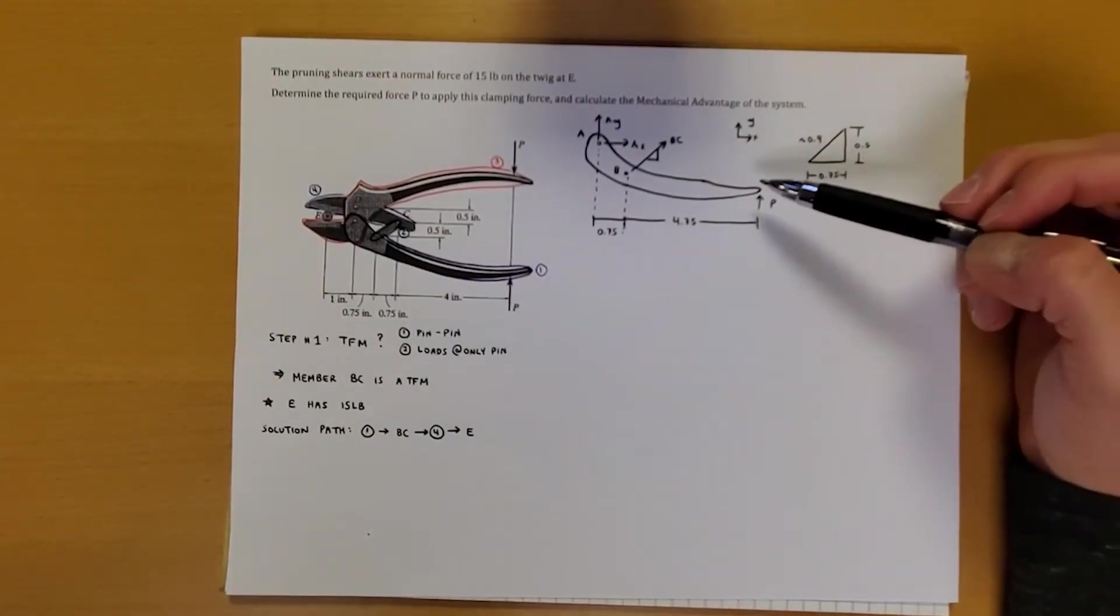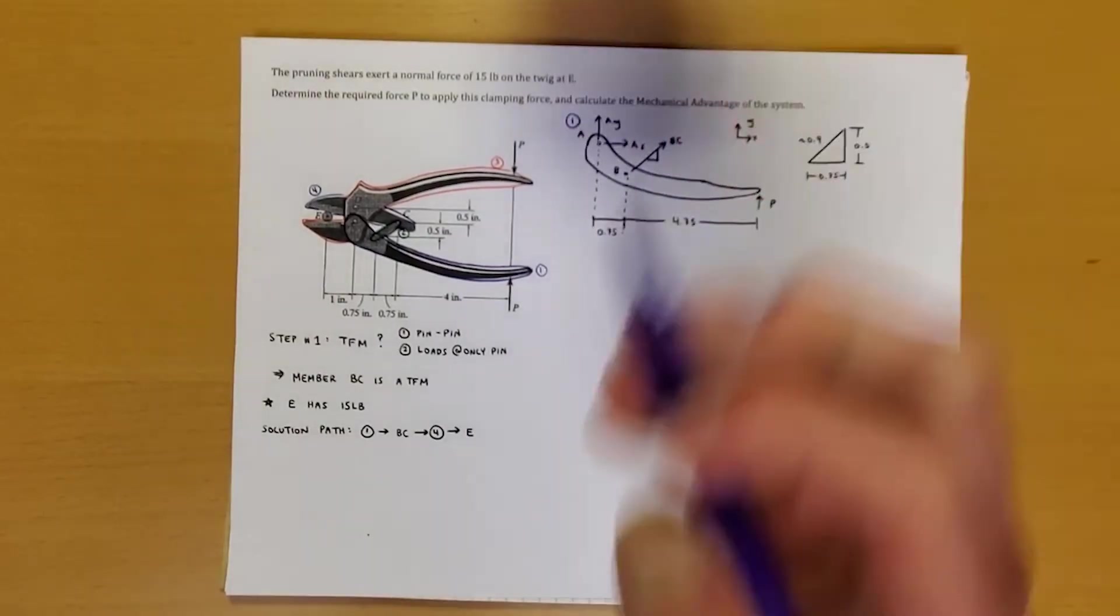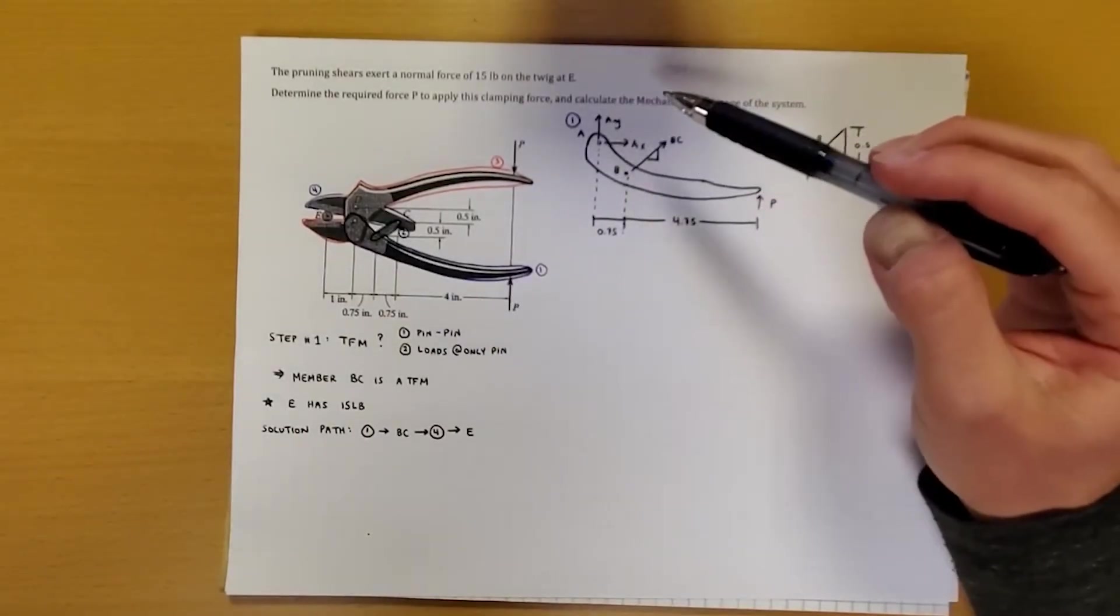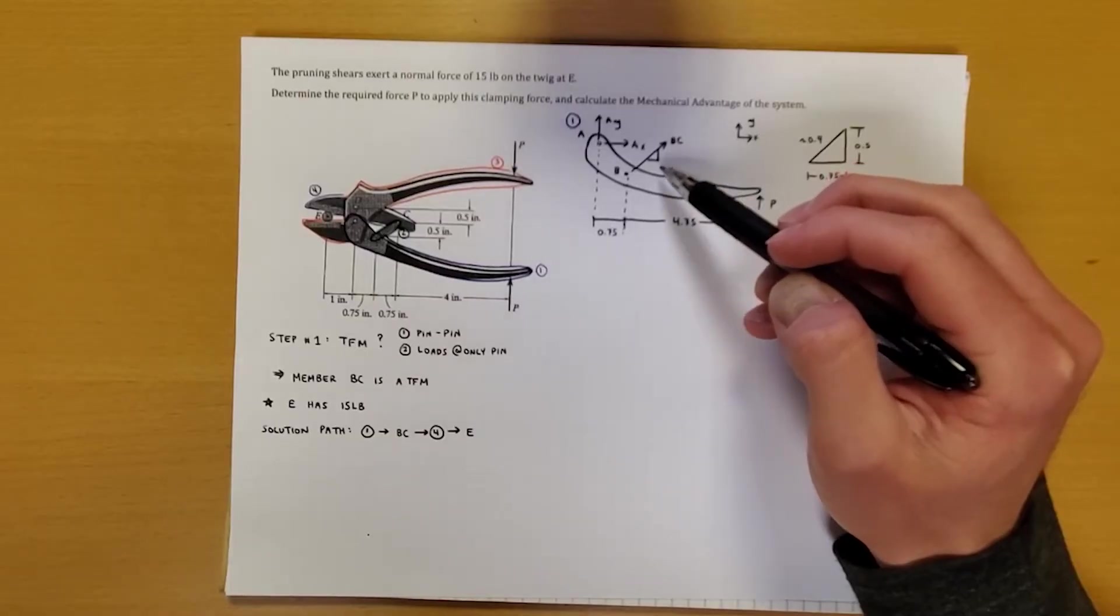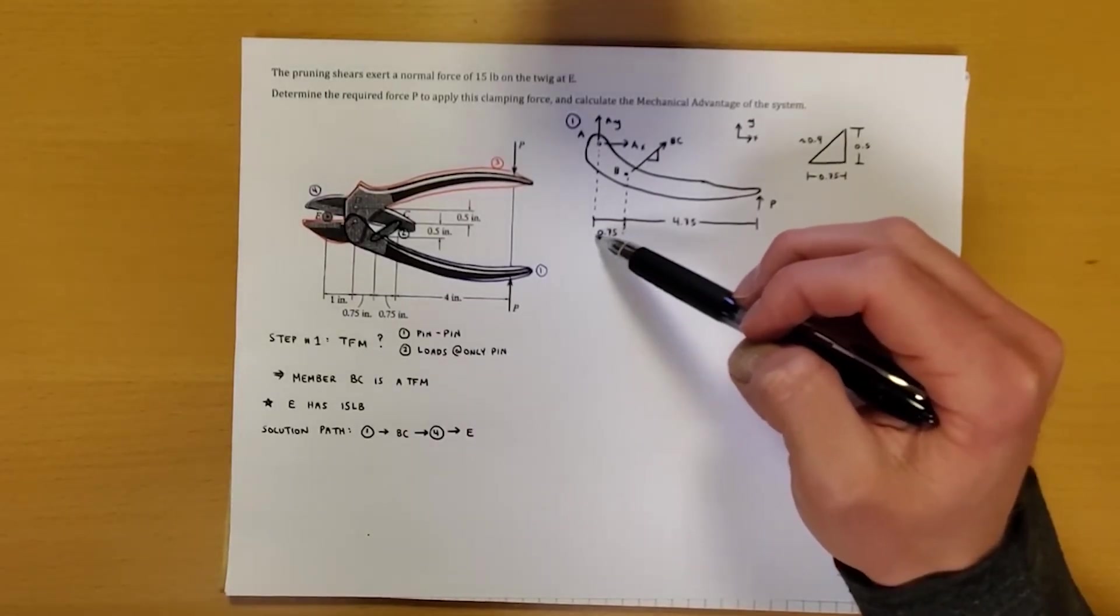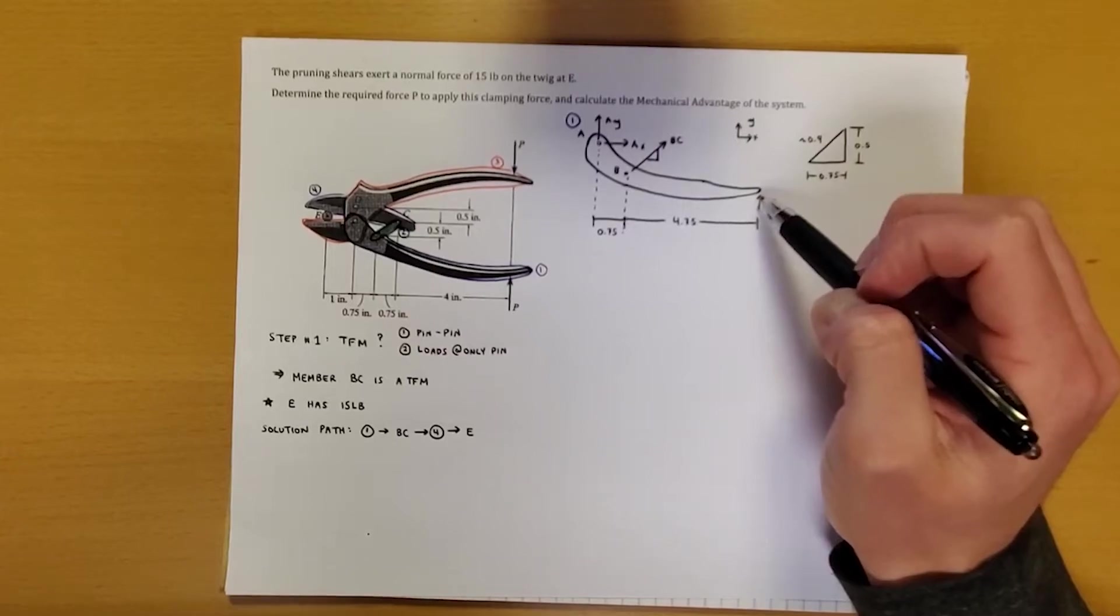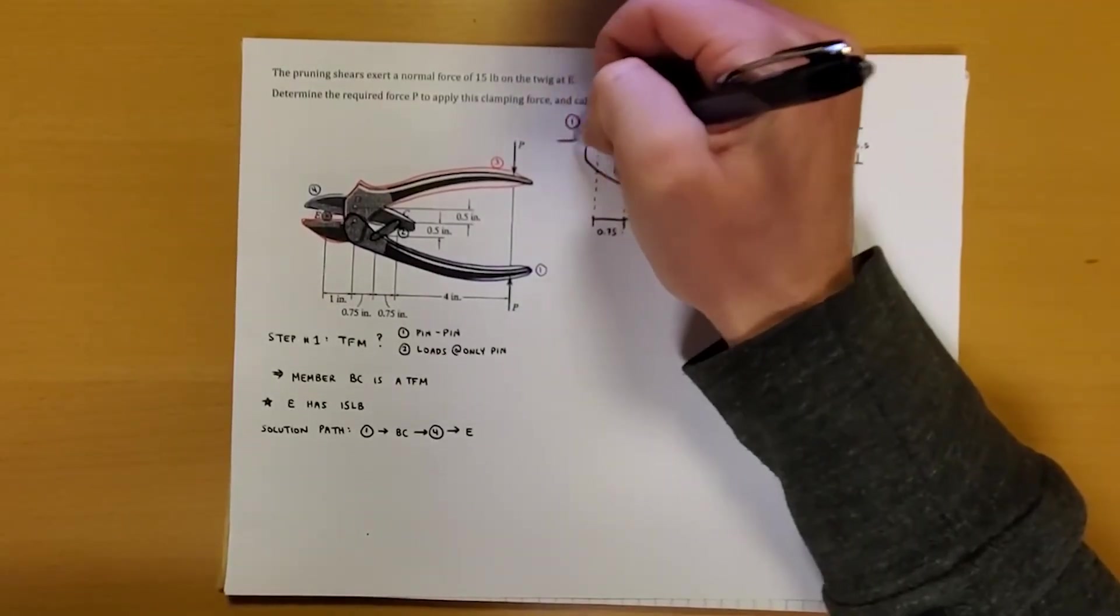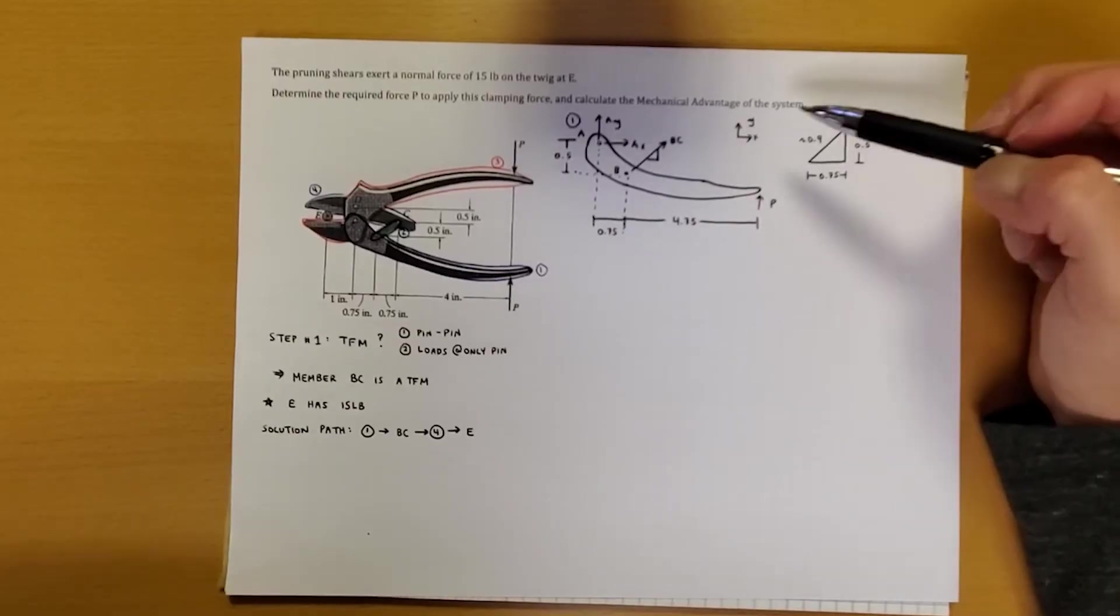So essentially what I've done here is I've drawn the free body diagram of this bottom handle piece right here, which let me go back and label that is shape or component of our machine number one. So essentially what we have is we've got a pin at A, so that's AX and AY. We've also got point B. And because we said that BC was a two-force member, we'll draw BC and we'll just assume it's going out at some angle. The only dimensions we really need to know at this particular point are the following. This 0.75 down here, this 4.75 over to here from B to where the force P is being applied to the end. And if we look at the height difference between A and B, we can see that that is 0.5 inches, which I'll draw right here as well.